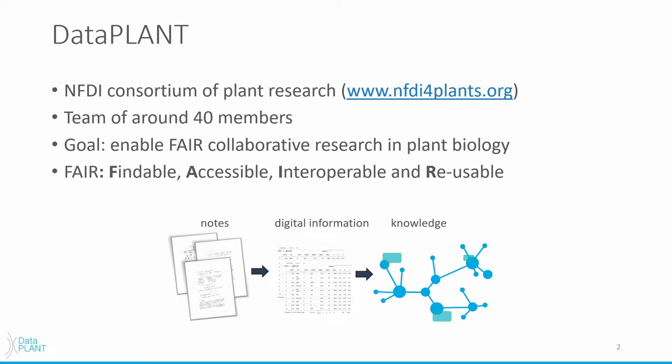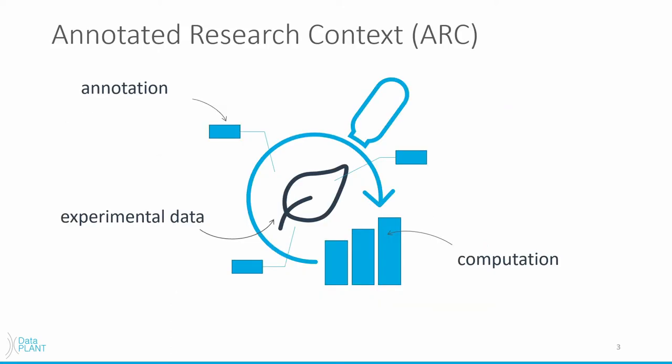And one way we want to achieve this goal is by developing a research data management system called the ARC, which is short for Annotated Research Context. ARCs act as a scaffold for managing research data, including metadata as well as computational workflows. And one important feature of ARCs is that they are executable with minimal effort on any type of system. So for now you can picture an ARC as a folder containing annotated research data and computational workflows, and in this talk we are taking a closer look at the challenges of handling the workflow side of an ARC and how we solve them.